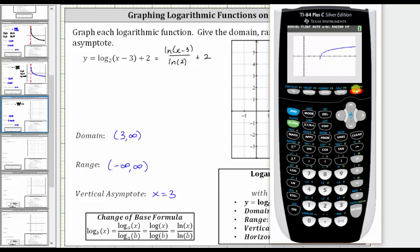Now the calculator does have limitations. We need to recognize that this graph does go down indefinitely and approach the vertical asymptote at x equals three. So this graph does verify the domain is the open interval from three to infinity. Because the graph goes up and down without any holes or breaks, the range is all real numbers, or the open interval from negative infinity to positive infinity, and the vertical asymptote is x equals three.